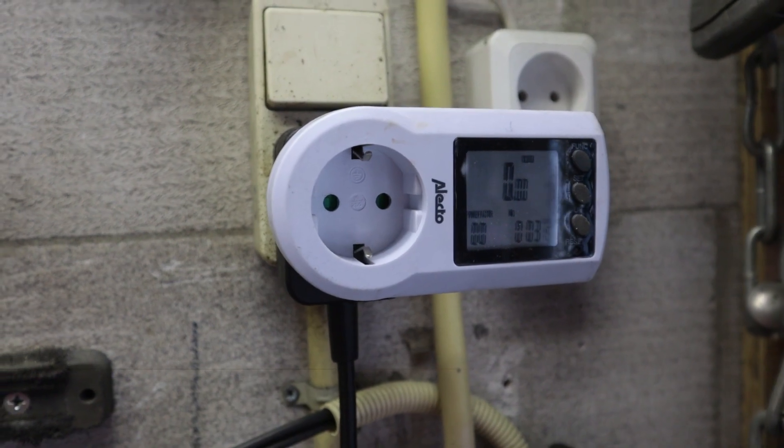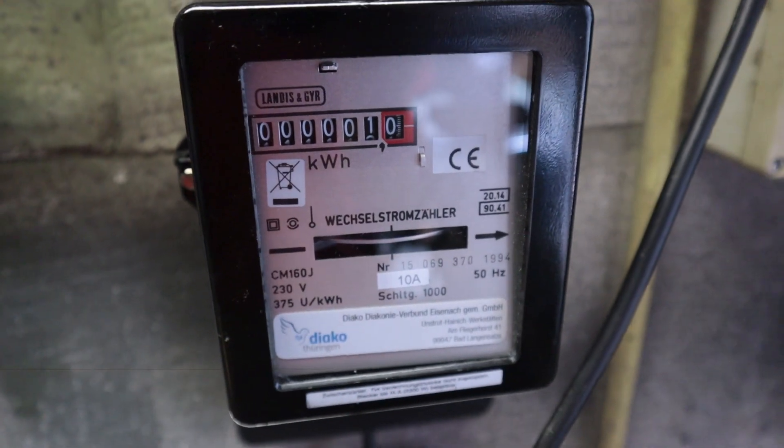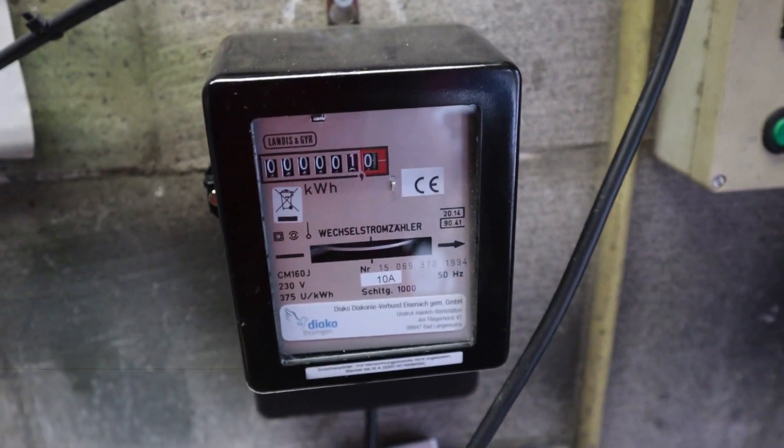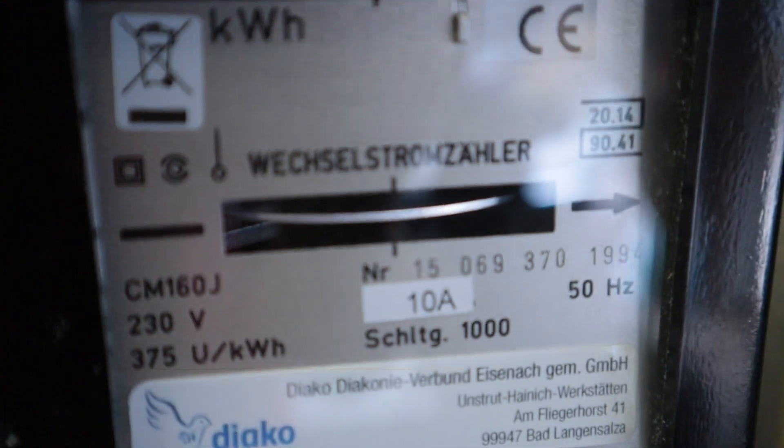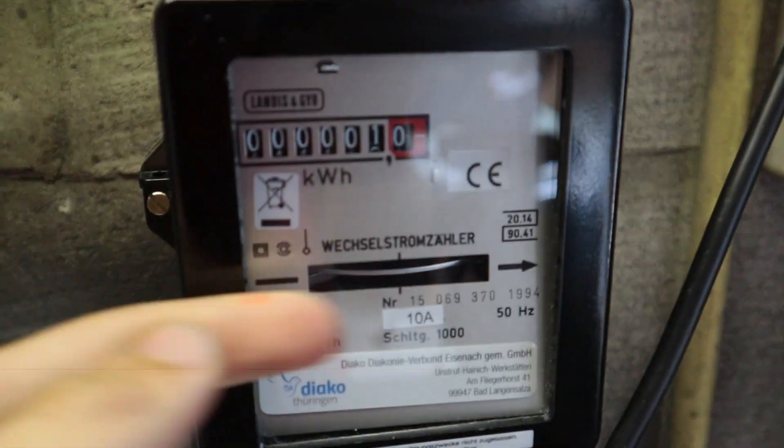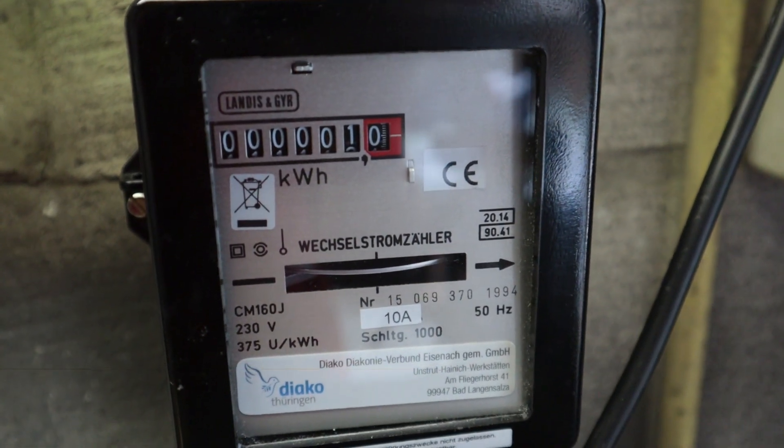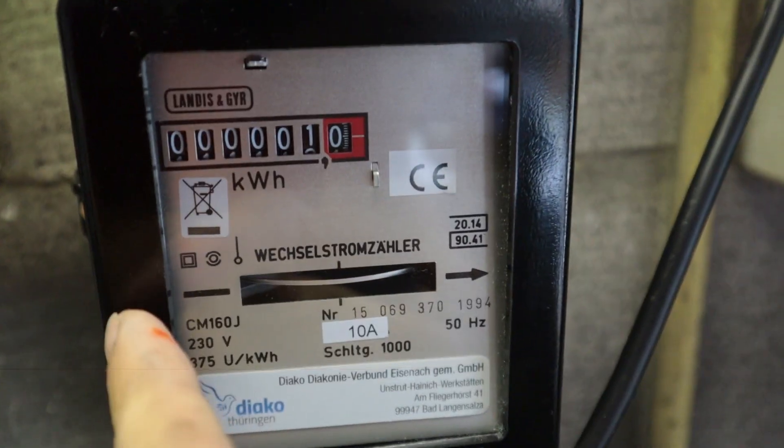So in order to solve that problem, I've also plugged in this cord which is attached to an analog kilowatt hour meter. And the nice thing about this is that it has a disk inside it that'll spin, and it'll spin in that direction when you're drawing power from the grid.